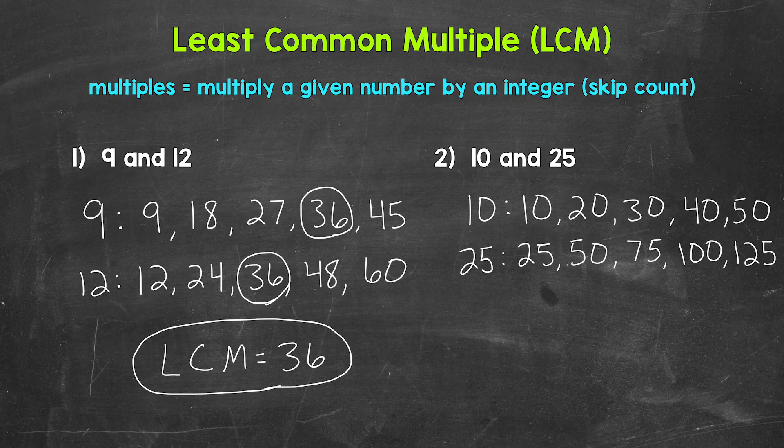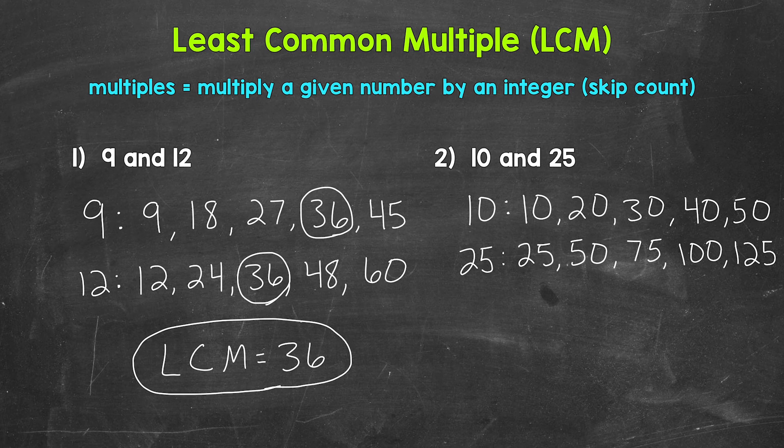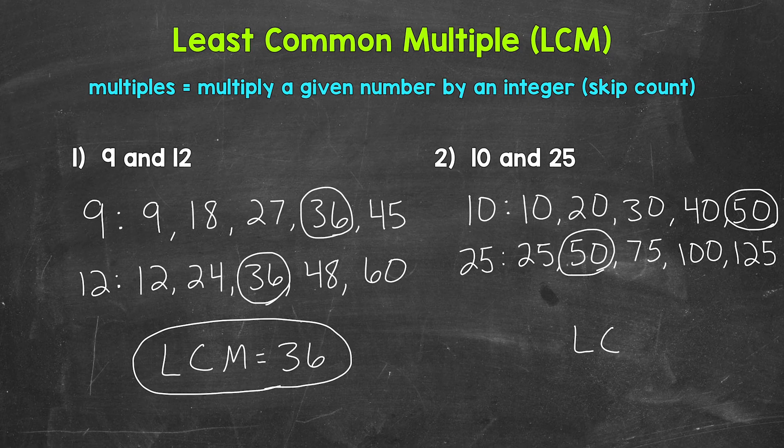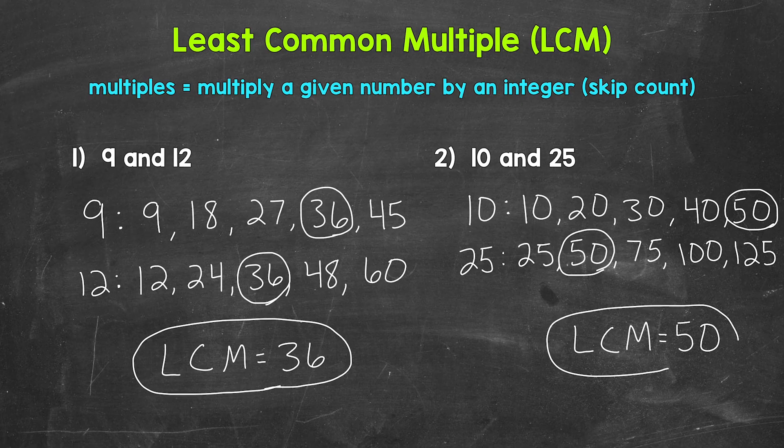Now that we have some multiples listed, we can look for common multiples, and specifically the least common multiple. Well, 50 is a common multiple, and it happens to be the least common multiple. So the LCM is 50. The least common multiple of 10 and 25 is 50.